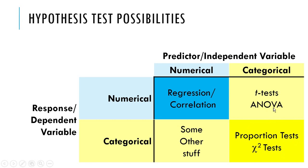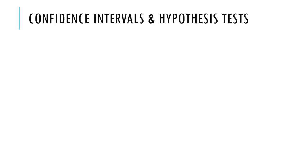Now we're going to work on the situation where you have a categorical predictor and response variable. First we're going to tackle proportion tests and then later we're going to tackle the chi-square tests. We're going to start out with the situation where there is really no predictor variable — just a single response variable — and then move on to two-sample proportion tests. But let's start with one-sample proportion tests, which is a little easier.